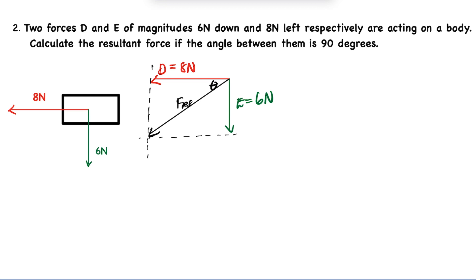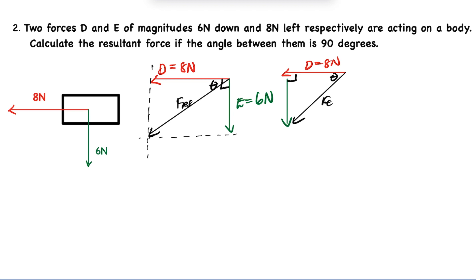Alternatively, using the tail-to-head method: draw the 8 Newton force D, then attach the 6 Newton force E at its head. The resultant goes from the tail of the first vector to the head of the last vector. The angle is there, with 90° confirmed between the two component forces, giving us the resultant force.